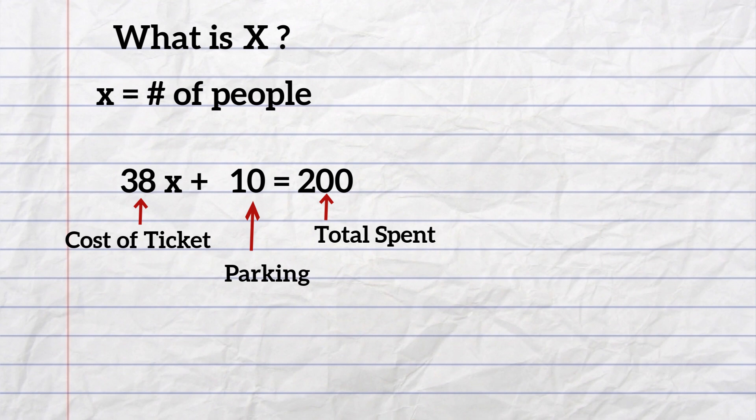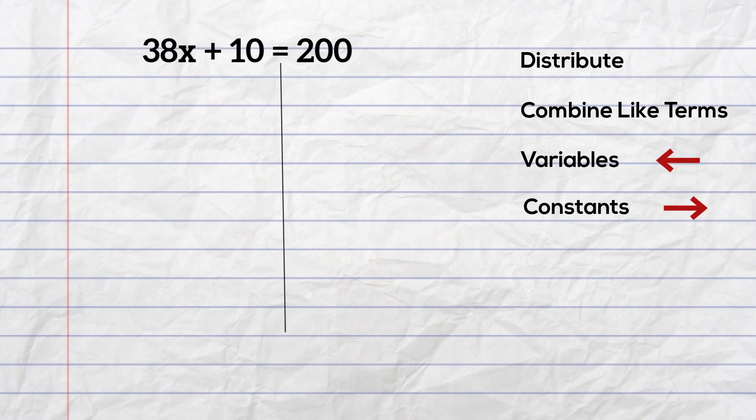Now I just solve it. I will first distribute, but there's nothing to distribute. And then if I needed to, I would combine like terms, and then I would move variables to the left and constants to the right. If you'll notice, I already have all the variables to the left, so I just need to move the numbers to the right.